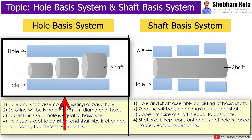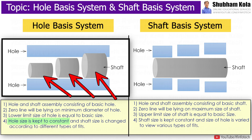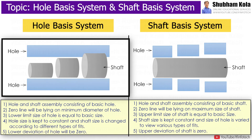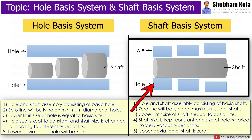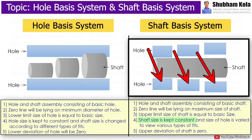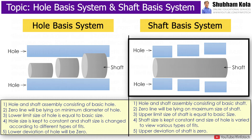In hole basic system, the hole size is kept constant and shaft size is changed according to different types of fits. In this system, the lower deviation of hole will be zero. Whereas in shaft basic system, the shaft size is kept constant and size of hole is varied to achieve various types of fits. In this system, the upper deviation of shaft is zero.